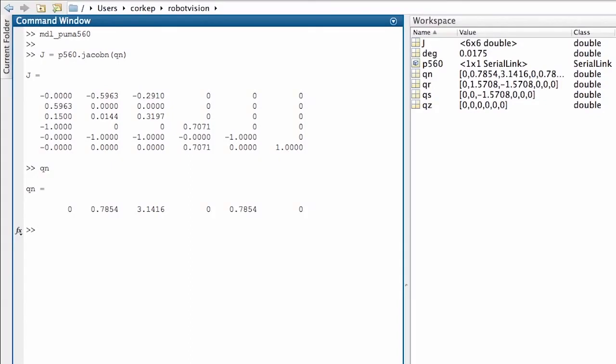This is what it looks like in radians and this is a robot configuration, a set of robot joint angles that puts the robot's end effector somewhere in the middle of its useful workspace.